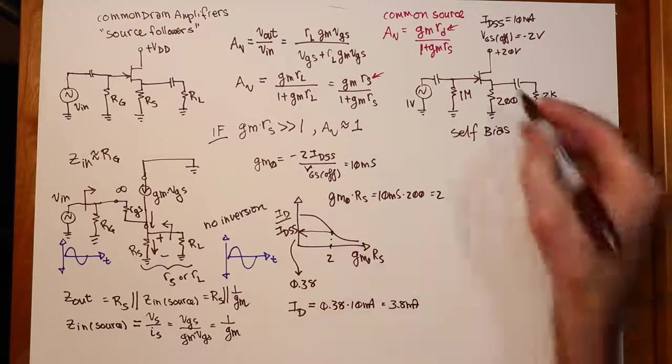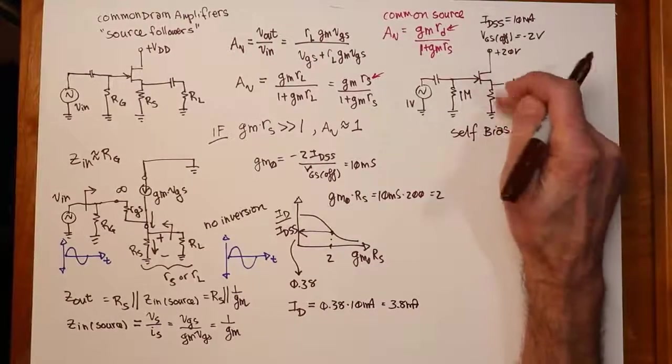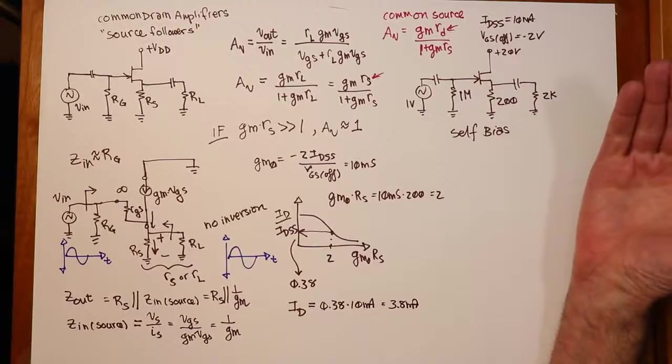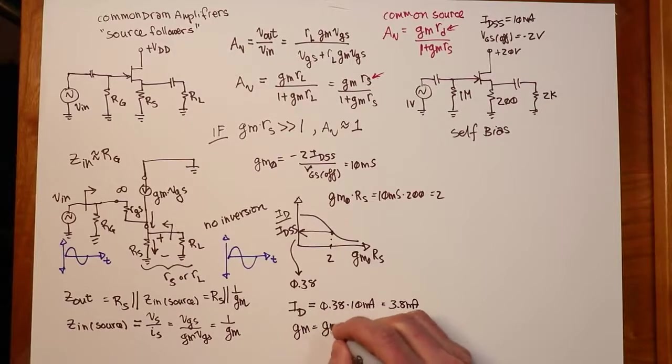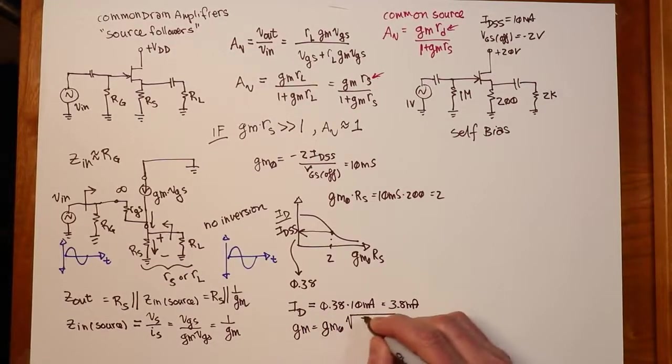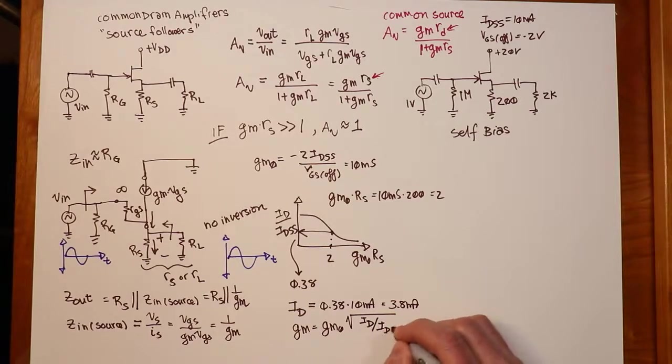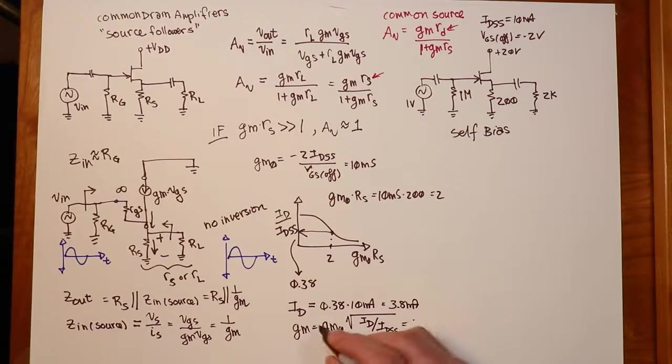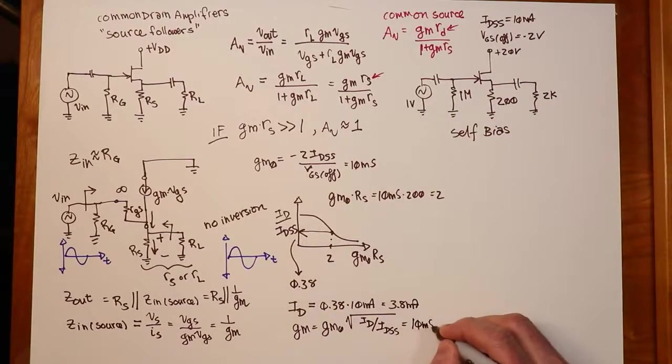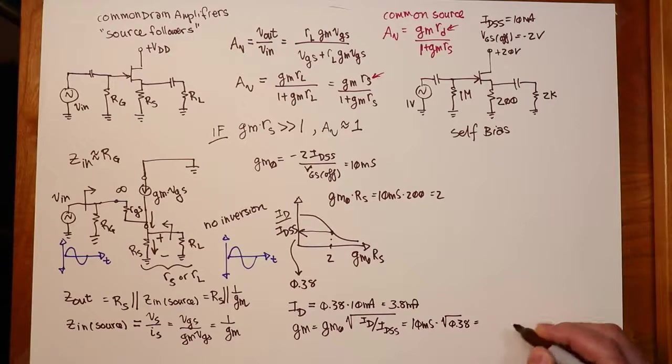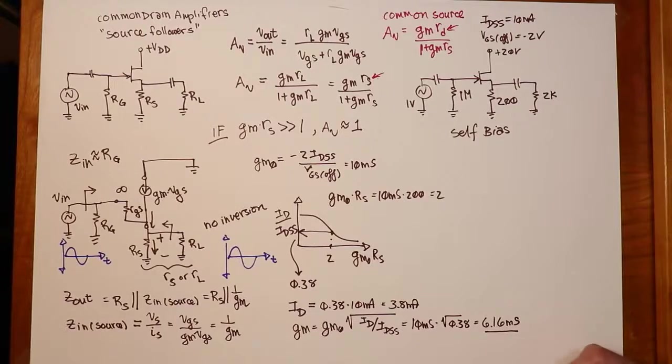IDSS is 10 milliamps, so that's going to equal 3.8 mils. Now we don't need to here, but if we wanted to, we could very quickly just do an Ohm's Law calculation and get the drop across there. I do, however, need to find the GM value, the transconductance value. So GM is equal to GM0 times the square root of ID over IDSS. For us, that's going to be GM0 10 millisiemens times the square root of 0.38, and that works out to 6.16 millisiemens.